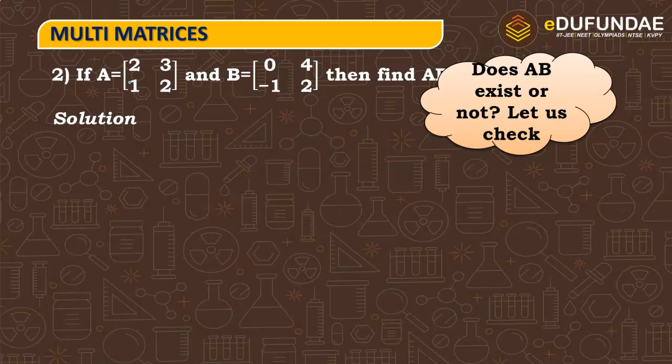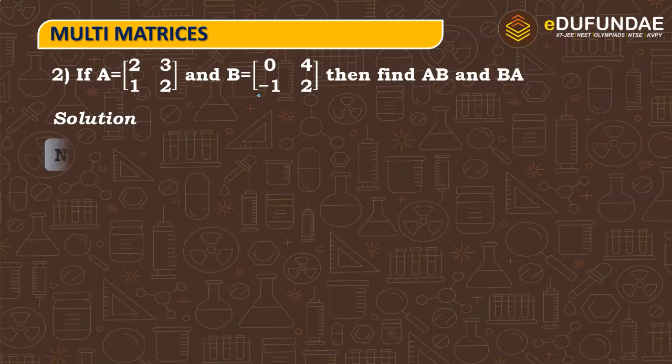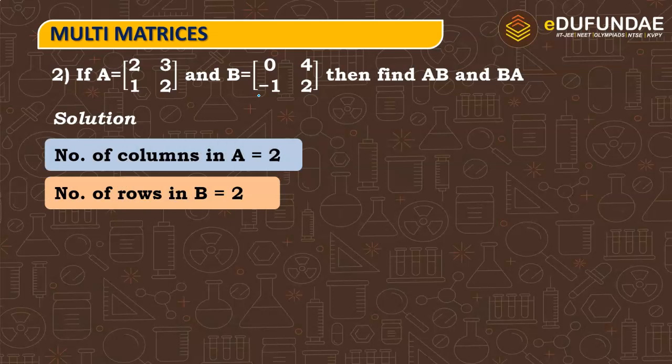So here we know, does AB exist or not? Let us check. Number of columns A, number of rows are equal to B, then exist. So number of columns in A is equal to 2, number of rows in B is equal to 2. So AB exists.